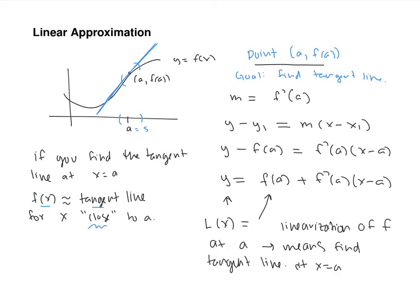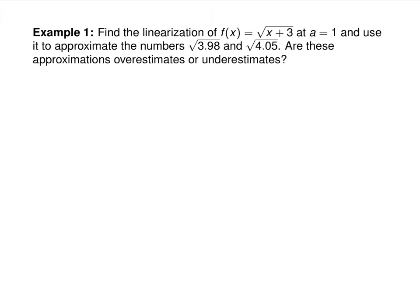Find the linearization of this function at A equals 1, and use it to estimate the numbers 3.98 and 4.05. Are these approximations overestimates or underestimates? First step is find the linearization — find the tangent line at A equals 1. That's our x-value. To find the y-value, plug it in: root(1 + 3) equals root 4, which is 2. So you have the point (1, 2).